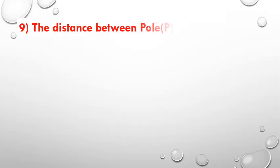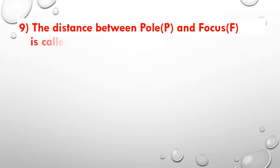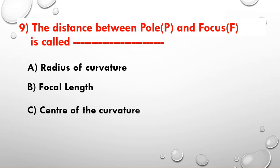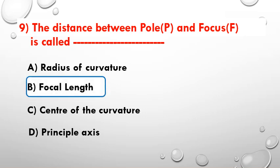The distance between the pole and focus is called — option A: radius of curvature, option B: focal length, option C: center of curvature, option D: principal axis. The answer is focal length.